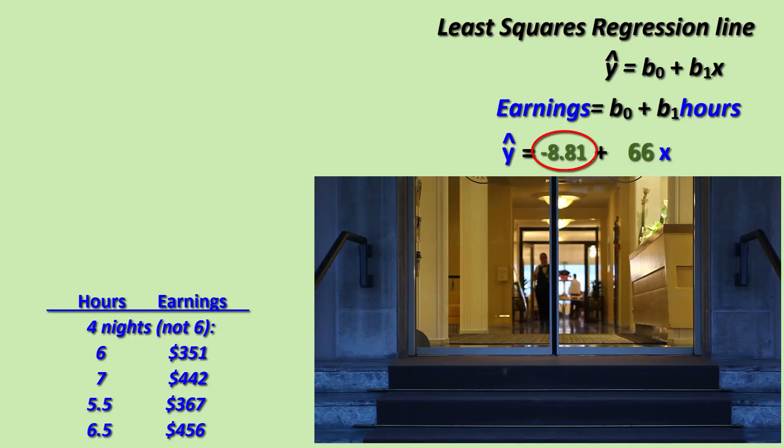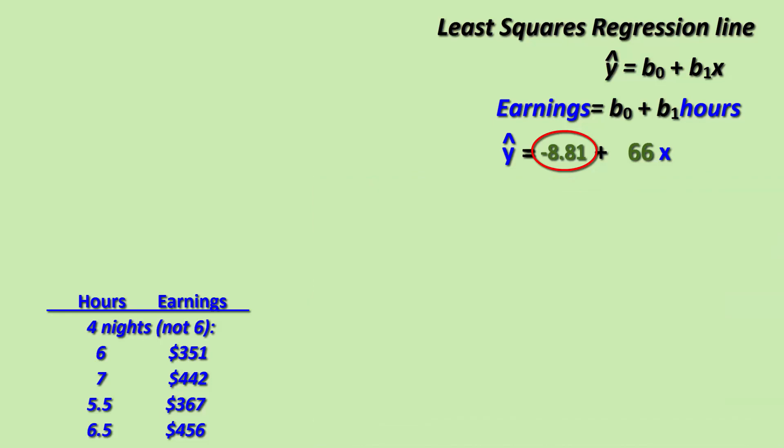Once again we see a y-intercept that doesn't make sense in the context. She would not owe eight dollars and 81 cents at the beginning of her shift. Recall that this is due to random chance fluctuation. The slope is what she's after and she's now found that sixty-six dollars per hour is a good approximation or a reasonable approximation at this point.